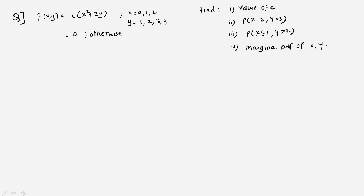Let's start with the equation: small f(x, y) — small f always means it is a PDF. If it were capital F, that would be a CDF, and you would need to convert the CDF into PDF to solve this kind of question. The equation is c times x² + 2y, where x ranges from 0 to 2 and y ranges from 1 to 4; otherwise the function is 0.